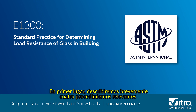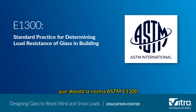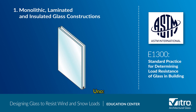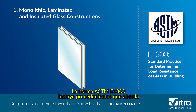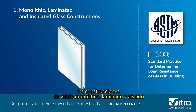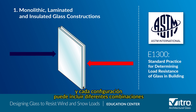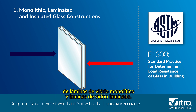We'll briefly describe four relevant procedures addressed by the ASTM E-1300 standard. One: ASTM E-1300 includes procedures that address monolithic, laminated, and insulated glass constructions made with annealed or heat-treated glass. IGUs can have various glass makeups, and each configuration can include different combinations of monolithic glass lights and laminated glass lights.